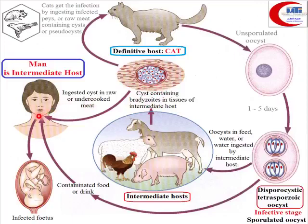How can a human get the infection? Through ingestion of the infective stage — the sporulated oocyst — or through ingestion of the true cyst or tissue cyst. In both cases, the human body can develop tissue cysts as well.